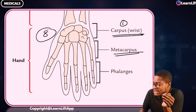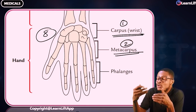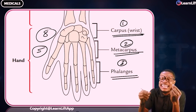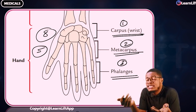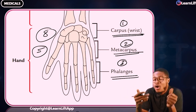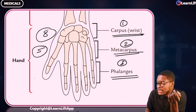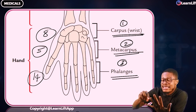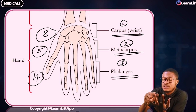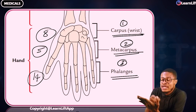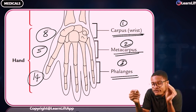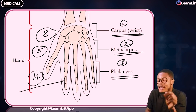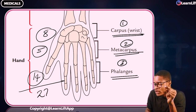The metacarpus, the second part, includes the metacarpal bones — there are five metacarpals. Number three is the phalanges, which are the digits including the thumb and fingers. There are 14 phalanges in total: each finger has three phalanges giving 12, and the thumb has two, giving 14 altogether.